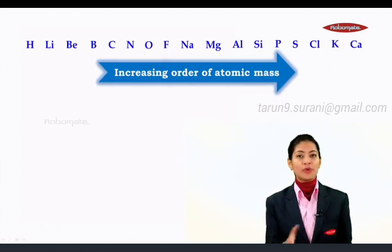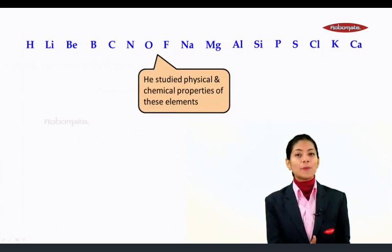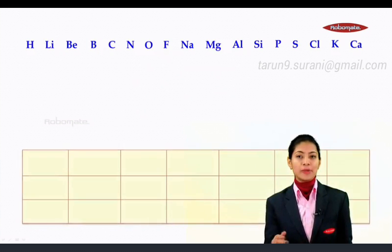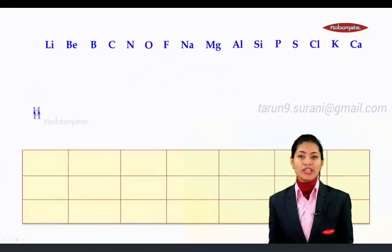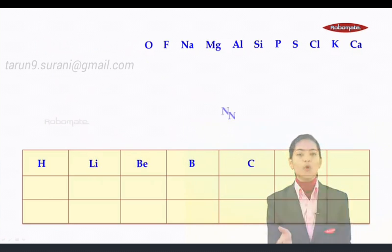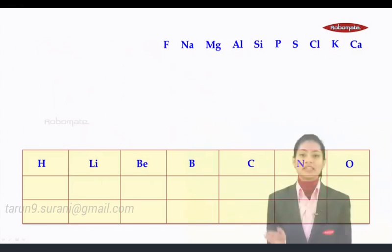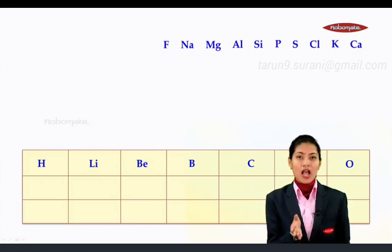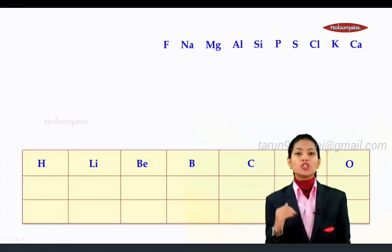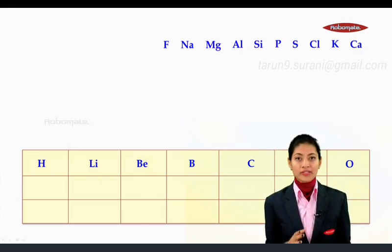So he took all these elements and arranged them in the increasing order of their atomic masses. He also studied the physical and chemical properties of these elements. For his consideration, he took the first element hydrogen, studied the property, kept it aside, went for lithium, similarly beryllium, boron, carbon, nitrogen, and oxygen. He realized that hydrogen, lithium, beryllium, boron, carbon, nitrogen, and oxygen do not have any similarities in the property, so they were placed one after another in a horizontal manner.